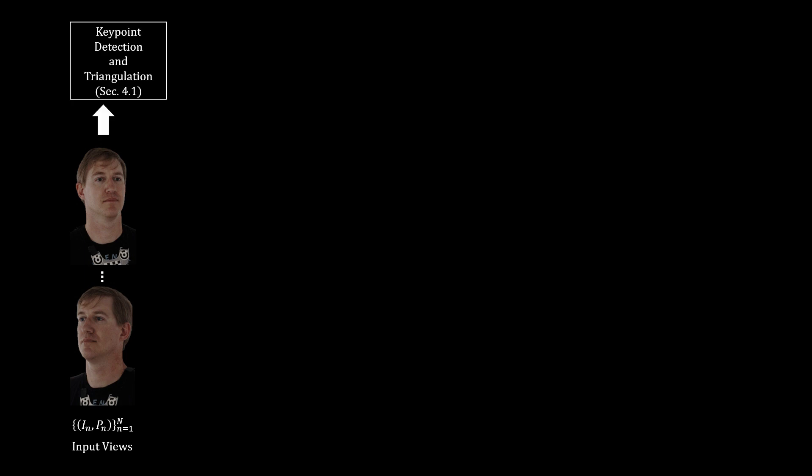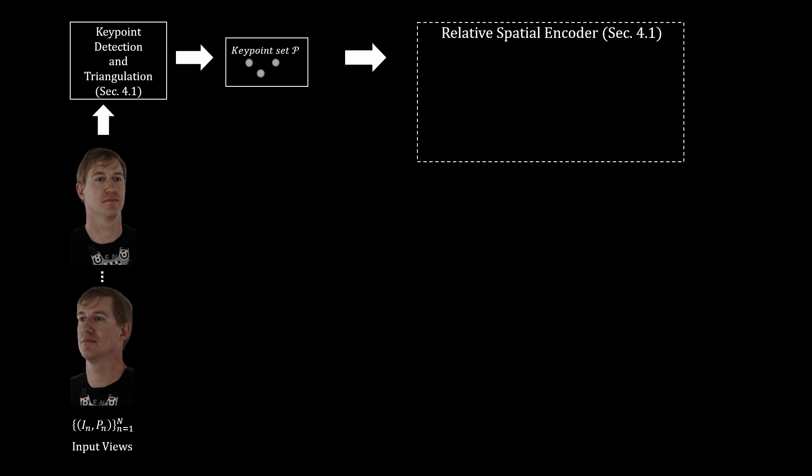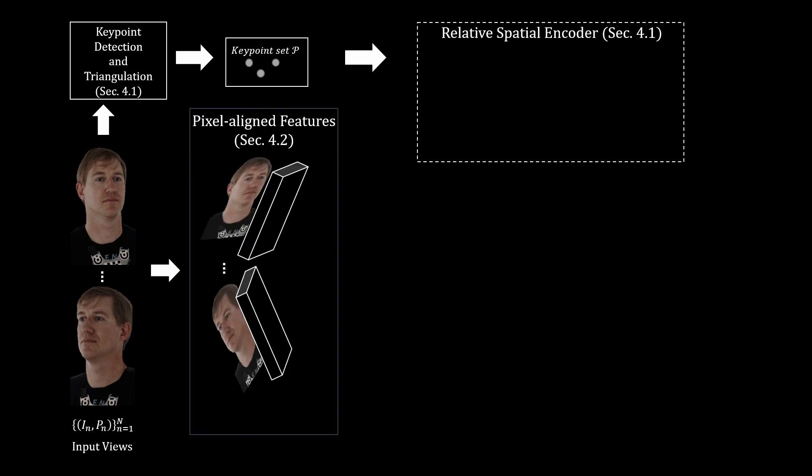Given a sparse set of input images and their camera parameters, we first detect keypoints and estimate their 3D positions. These keypoints are used to provide the relative spatial encoding. Simultaneously, the input images are encoded via convolutional encoders and provide image-guided pixel-aligned features.